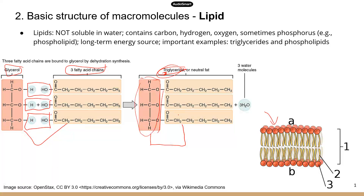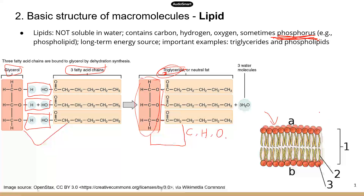So you have a head structure followed by three fatty acid tails. Triglycerides also have just three elements — carbon, hydrogen, and oxygen — but sometimes they have additional elements, like phosphorus. A good example of a lipid containing phosphorus is a phospholipid, which forms the backbone of the cell membrane — that's the phospholipid bilayer.